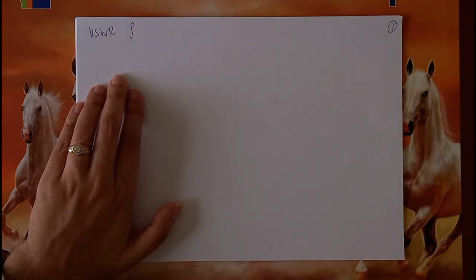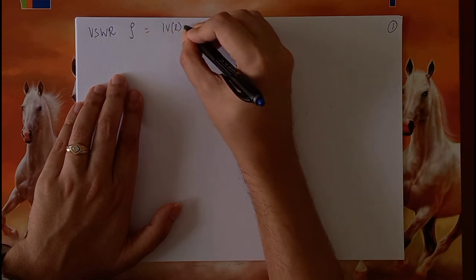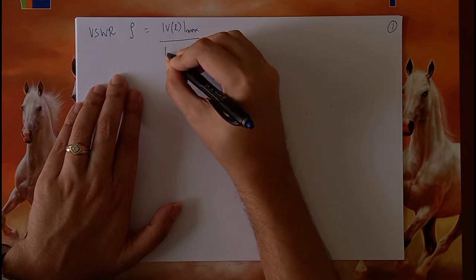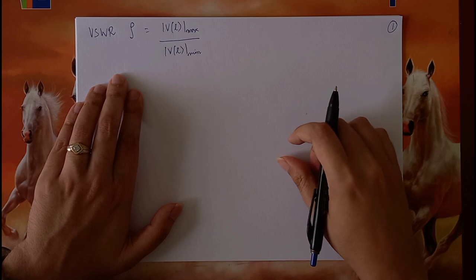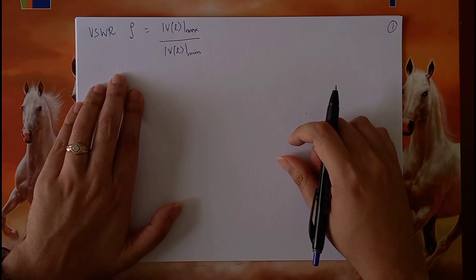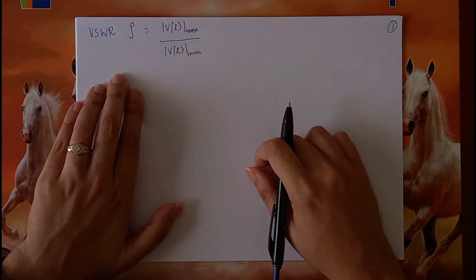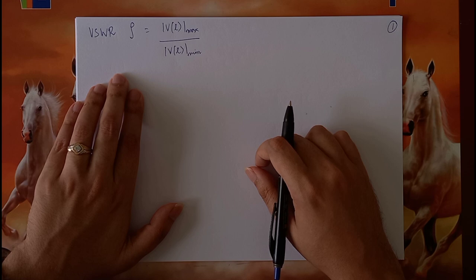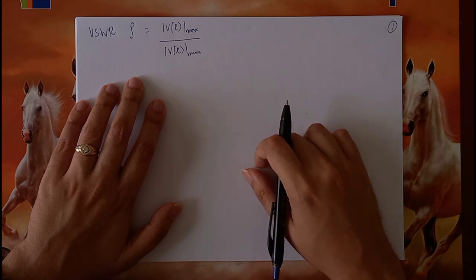The symbol was rho, and we said that rho is defined as the ratio of the voltage maximum magnitude to the voltage minimum magnitude on the line. We saw that the voltage on the line can be represented in a phasor or vector format, and we saw a graphical technique through which we can find the conditions when voltage will be maximum and when it will be minimum.